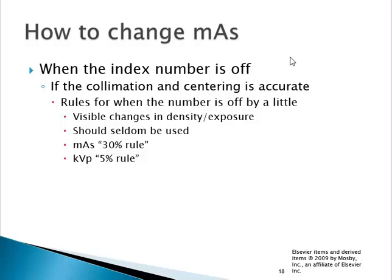Look at collimation. If your index number is off by just 30% and you need to repeat for a different reason, go ahead and change your technique. But if it's worth repeating, it's generally worth either cutting mass in half or doubling it. If you only need a 30% change in mass, or a 5% change in KVP, I'd be hard-pressed to re-expose the patient based on a barely visible change. Even on film, 30% was a barely visible change.